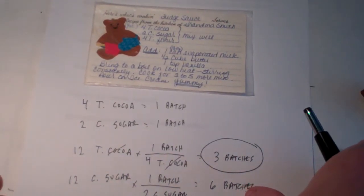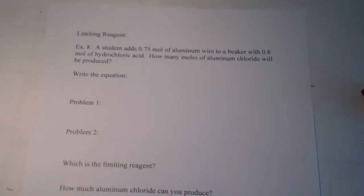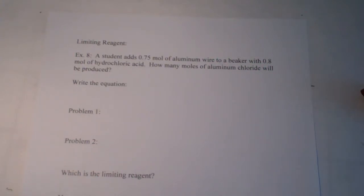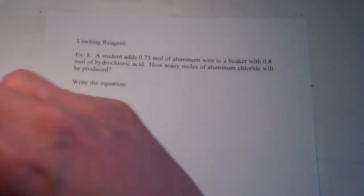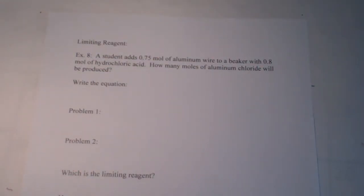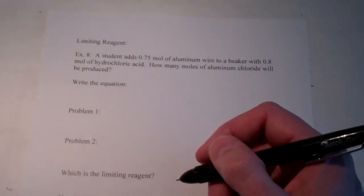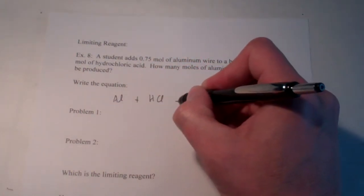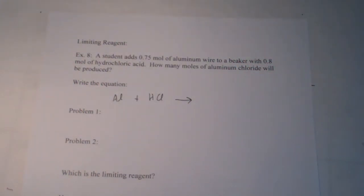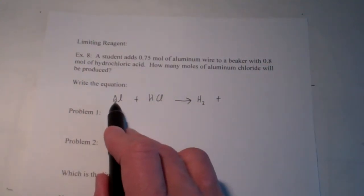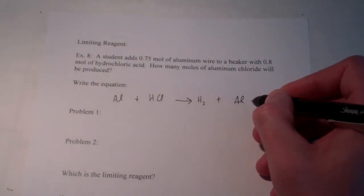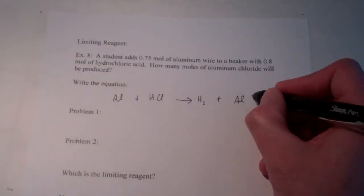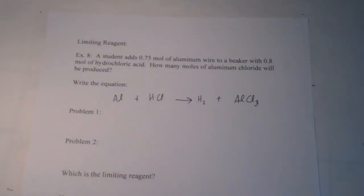Now the same thing happens in chemical reactions. Let's take a look at example number eight from our notes. We have some aluminum wire and some hydrochloric acid, and I want to know how many moles of aluminum chloride I can make with these two reactants. As with all stoichiometry problems, we need to write an equation. We're going to react aluminum with hydrochloric acid. This is a single replacement reaction — hydrogen gas will be produced and aluminum and the chlorides will get together. Aluminum has an oxidation number of 3+, chloride 1−, so we will make AlCl₃. Stoichiometry is the mathematics of a balanced equation, so we need to balance this.